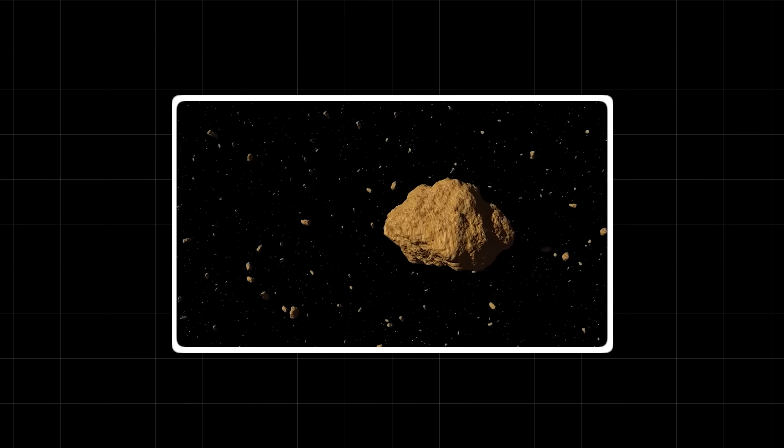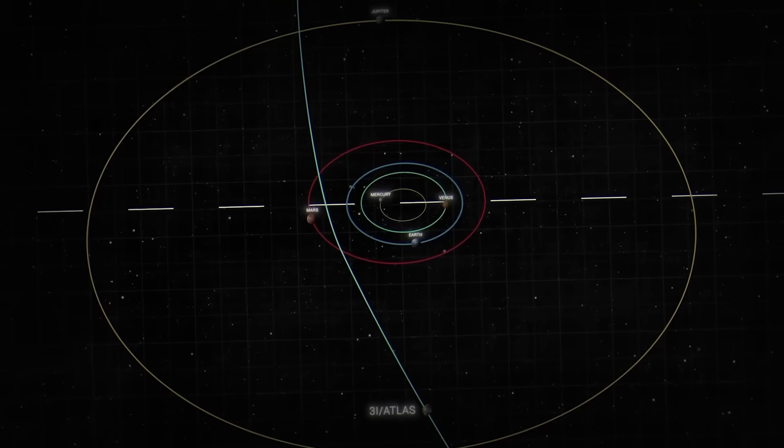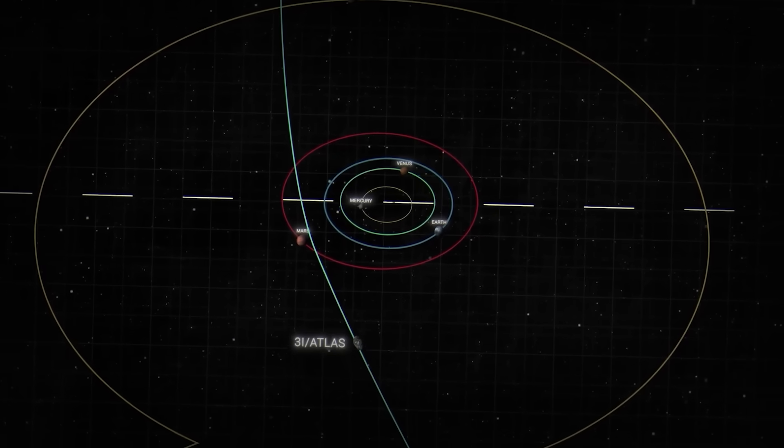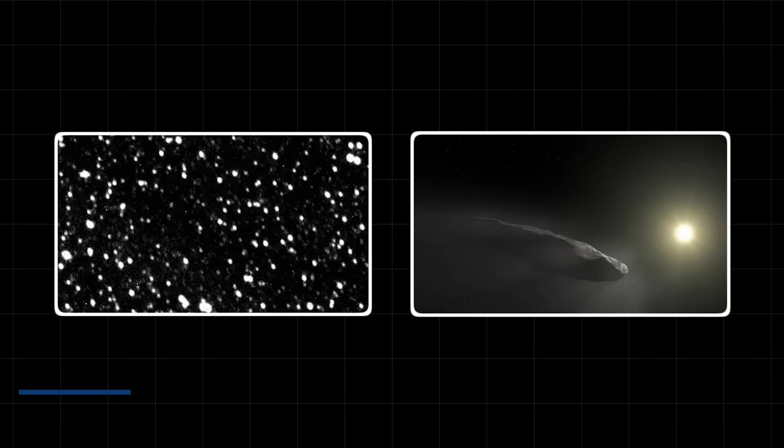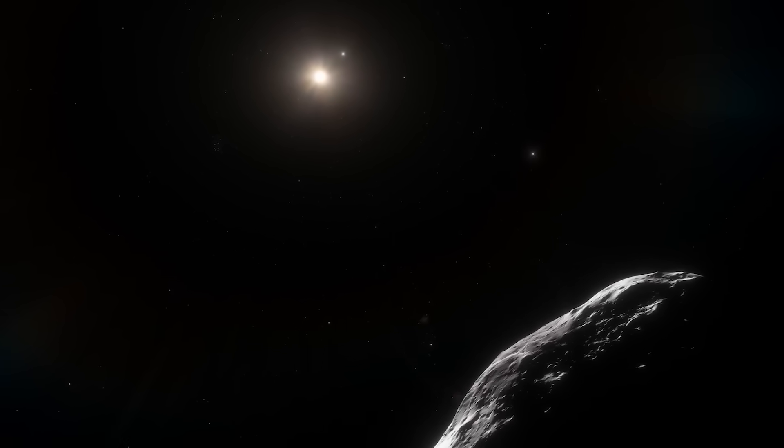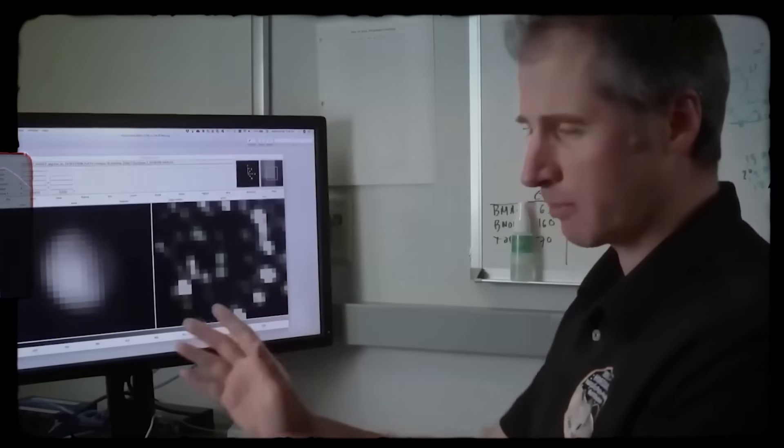Unlike the asteroids and comets that are native to our solar system, 3i Atlas was moving at a speed and trajectory that could only mean one thing: it was an interstellar visitor. This was only the second such object ever to be detected, after the enigmatic Oumuamua, which had baffled scientists with its strange, elongated shape and unusual acceleration. But 3i Atlas was different. It was much larger, and its path was far more predictable. And that's what made it so terrifying.